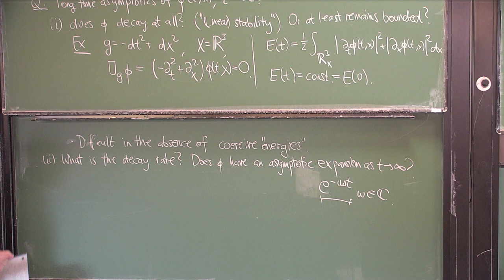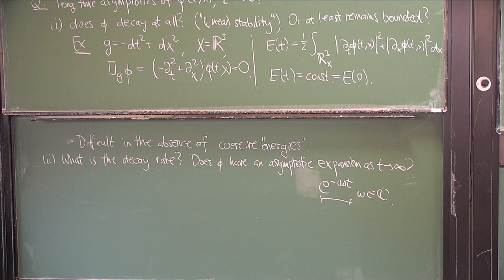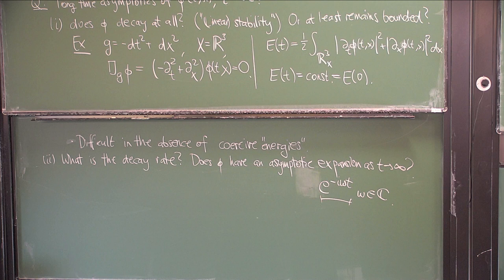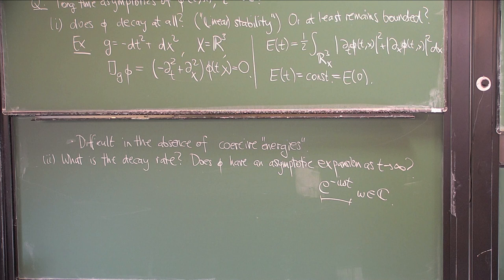I just want to briefly say that the two questions — what is the decay rate, and does there exist an asymptotic expansion — are a little bit distinct. It is of course possible that a solution has an asymptotic expansion involving an exponentially growing term. Such situations do occur. And if you can answer these various questions, then you can try to upgrade to understanding nonlinear stability problems, but I will not discuss that here.